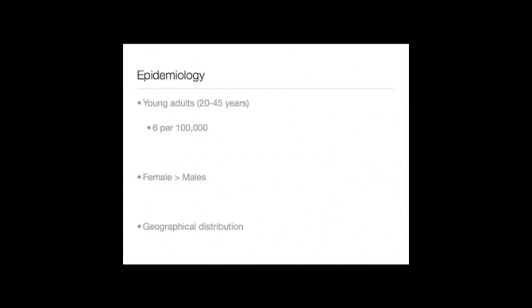In the United Kingdom, multiple sclerosis has an incidence of roughly 6 per 100,000, and it tends to be a disease of young adults, with the most common ages of presentation between 20 and 45. Importantly, it is more common in women than men. Interestingly, the prevalence of multiple sclerosis increases directly in proportion with the distance away from the equator.